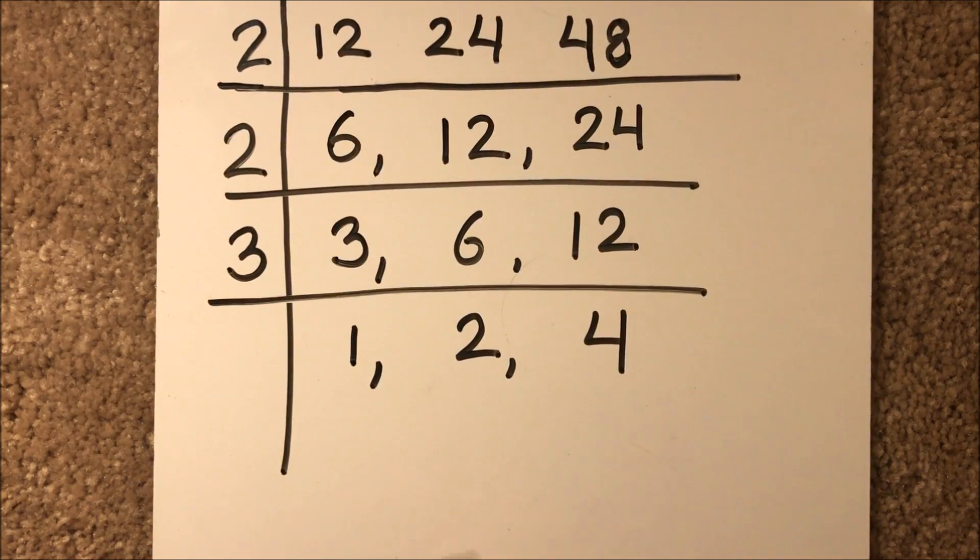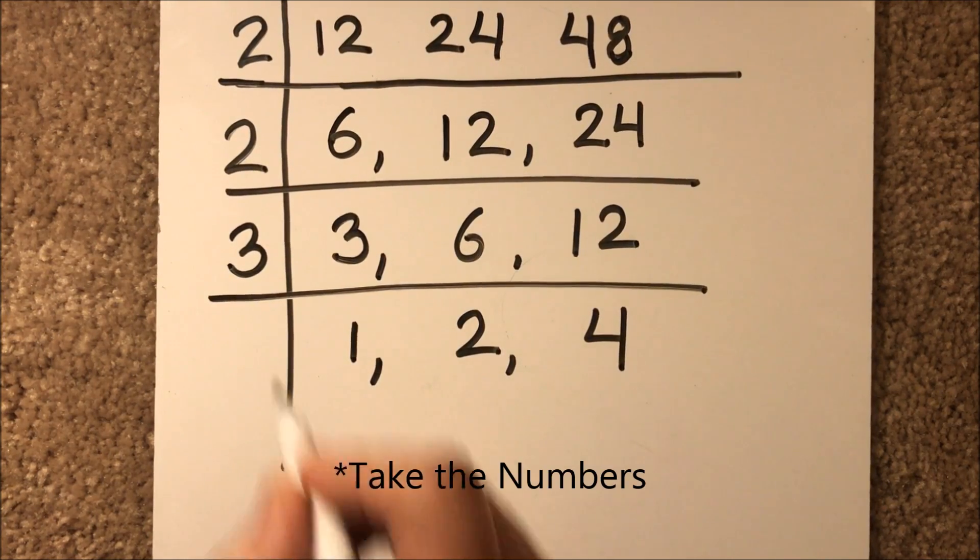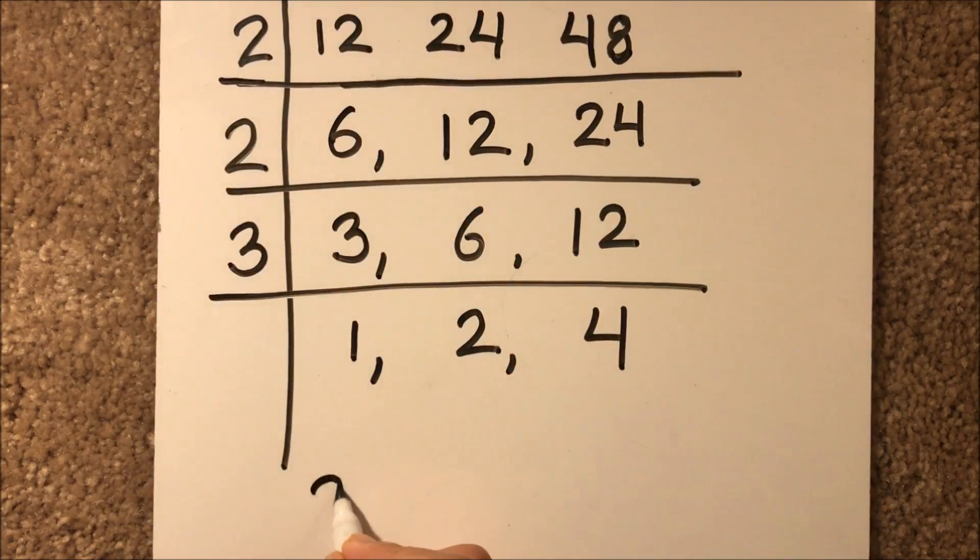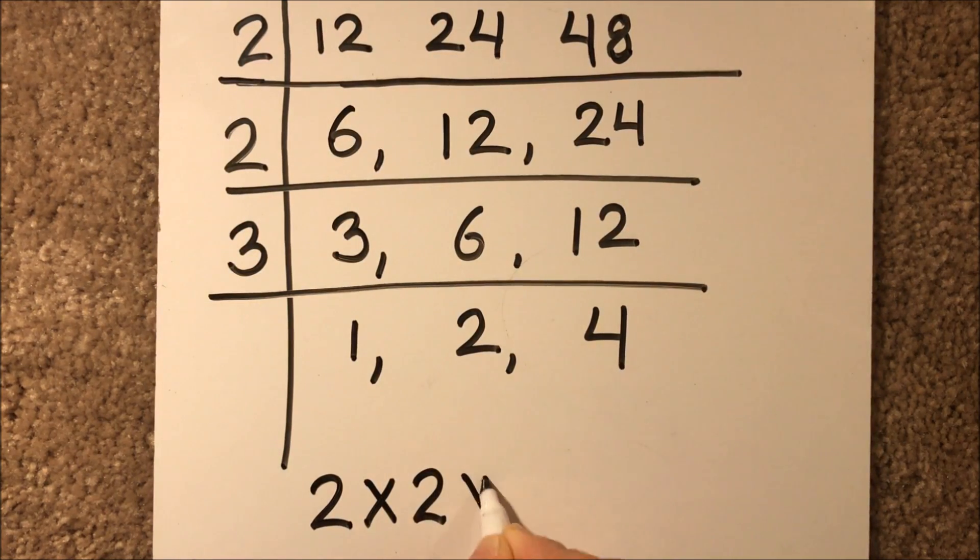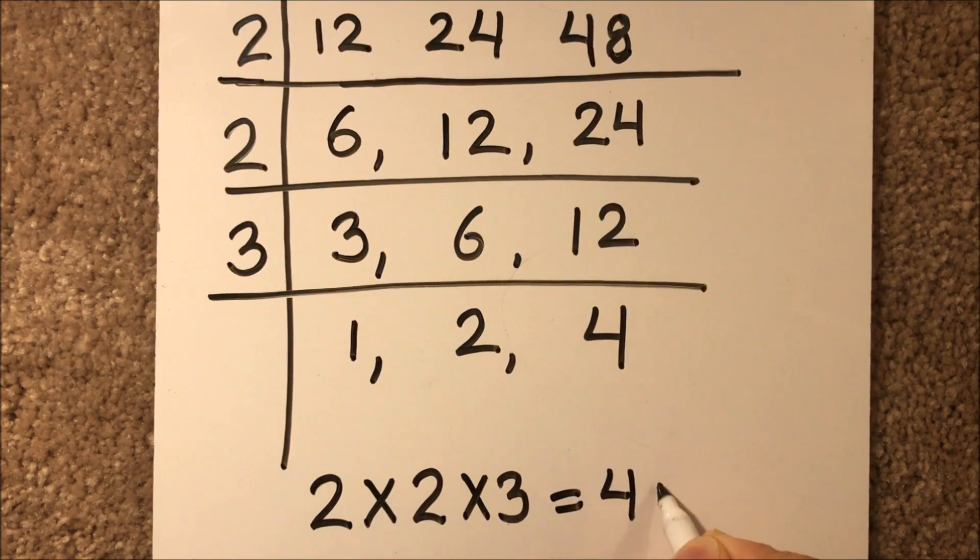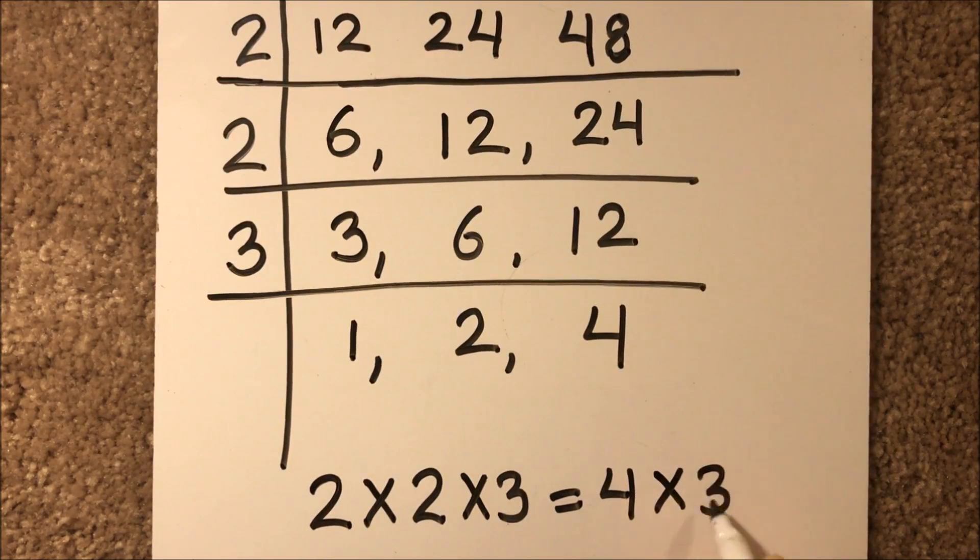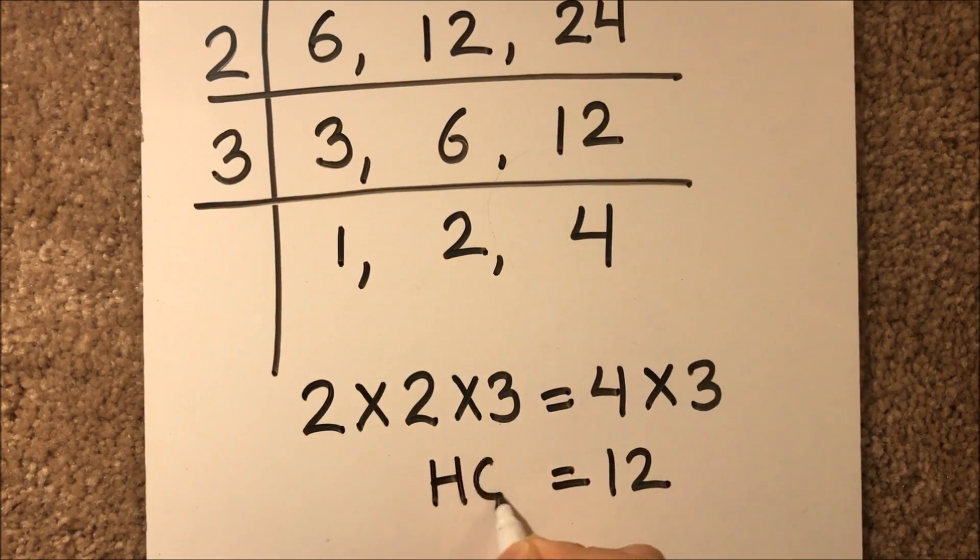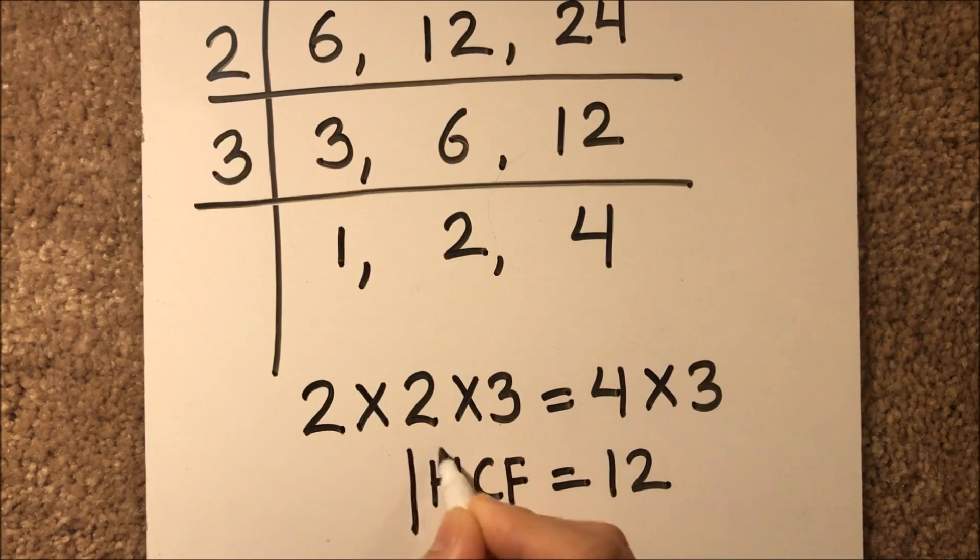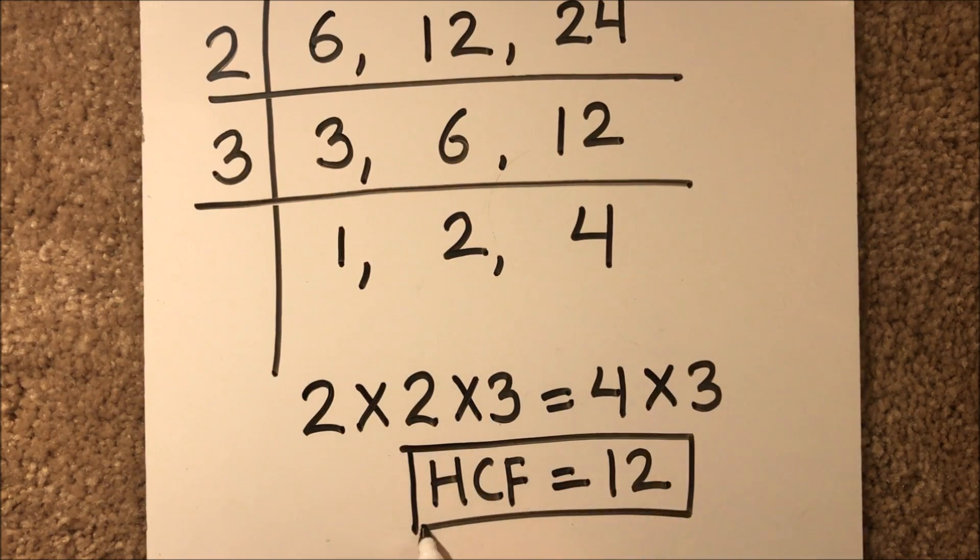And to find the GCF, what we'll do is we'll write the numbers on the left-hand side and we'll take the multiple of the numbers. So here, 2 times 2 times 3, that is 4 times 3, this is equal to 12. So the GCF or the HCF of the numbers here is 12. Thanks for watching.